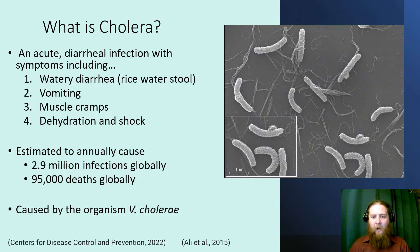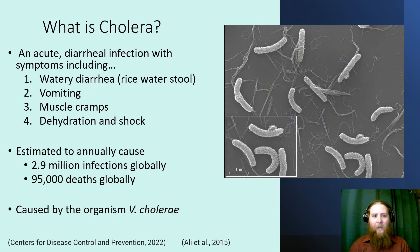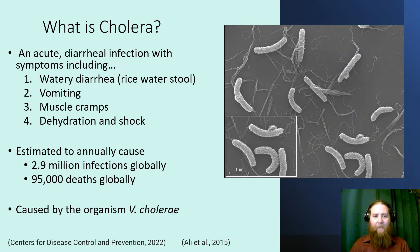Cholera is an acute diarrheal infection with symptoms including watery diarrhea, which we sometimes refer to as rice water stool. This is because of the sloughing of the epithelial walls of the stomach creating this rice-watery consistency. We also see vomiting and muscle cramps. Because of the heavy fluid loss, we see significant dehydration and shock. Annually, cholera causes 2.9 million infections across the globe and 95,000 deaths globally.